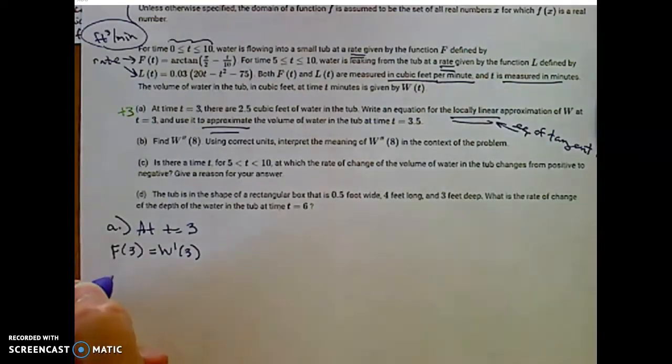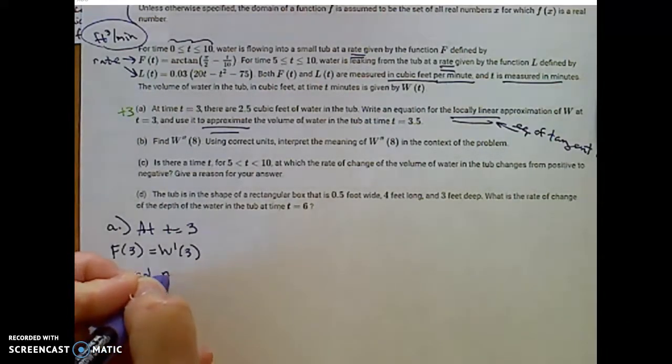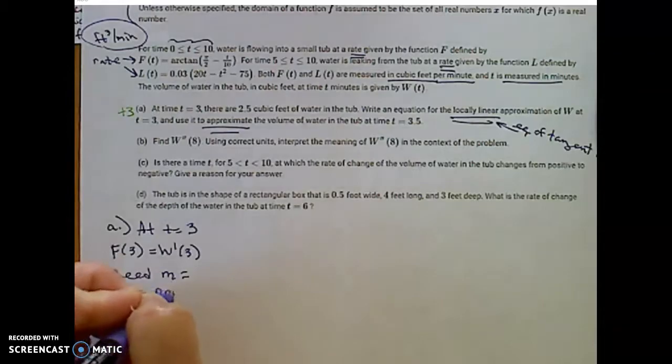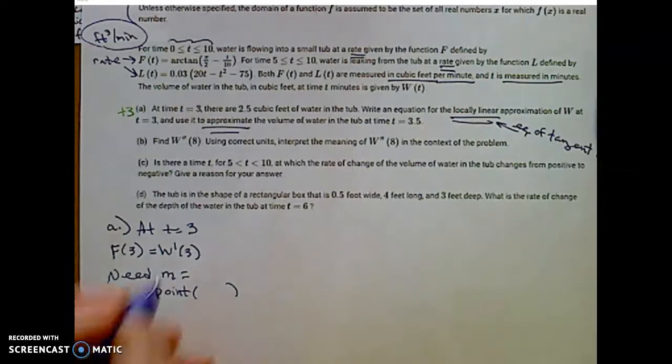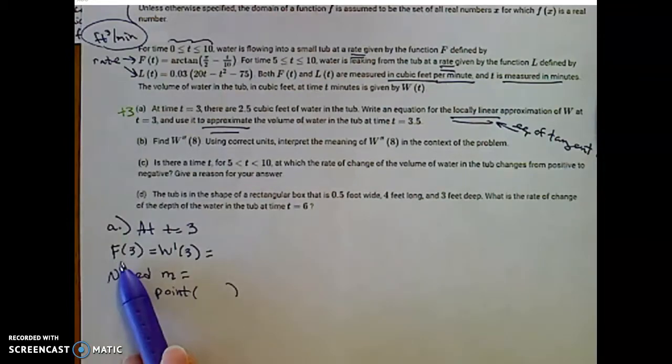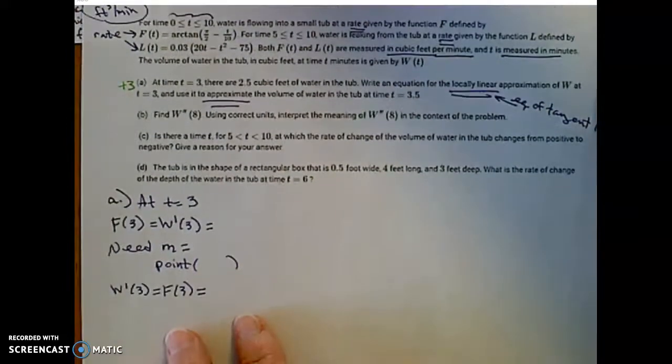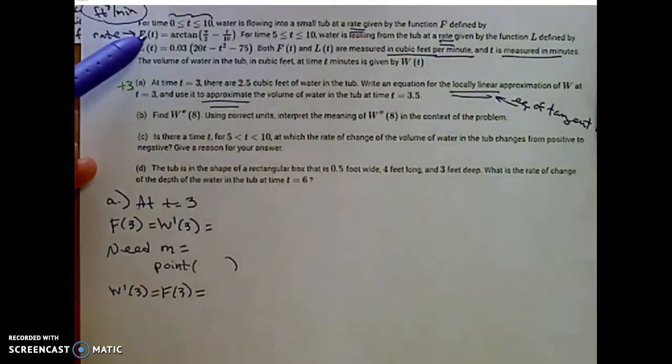So to find the local linearity, the equation of the tangent line, I need a slope, and I need a point. So the slope is going to come from w prime of 3, which is the same as f of 3. So to find the slope, w prime of 3 is the same as f of 3. I'm going to come up here to my function f.